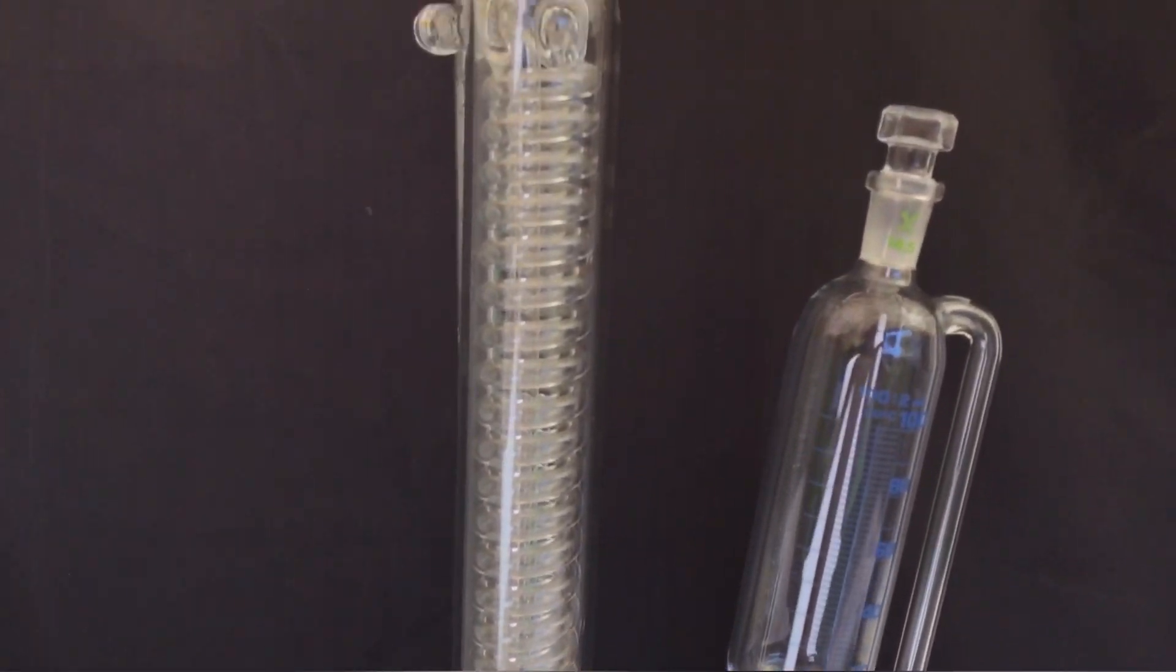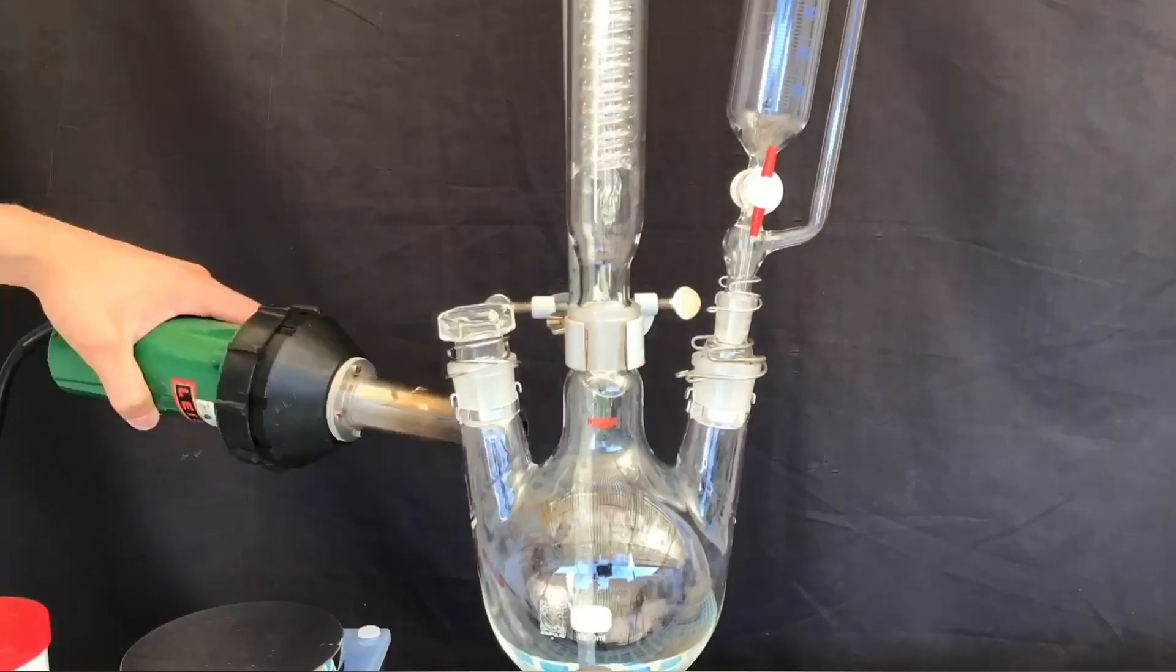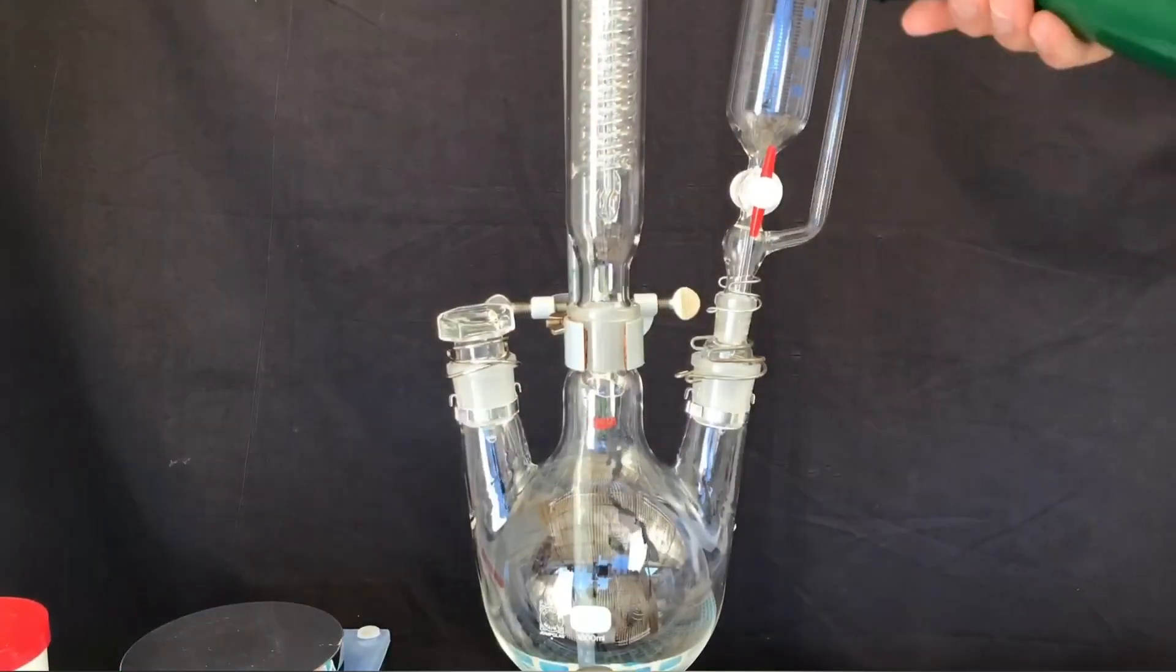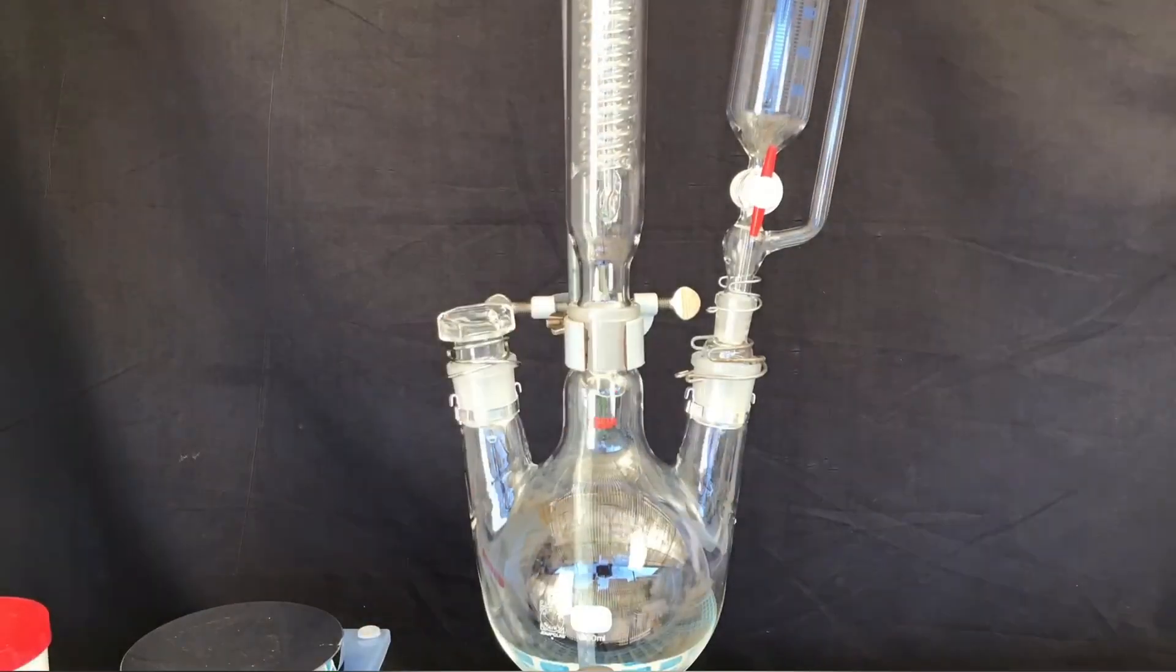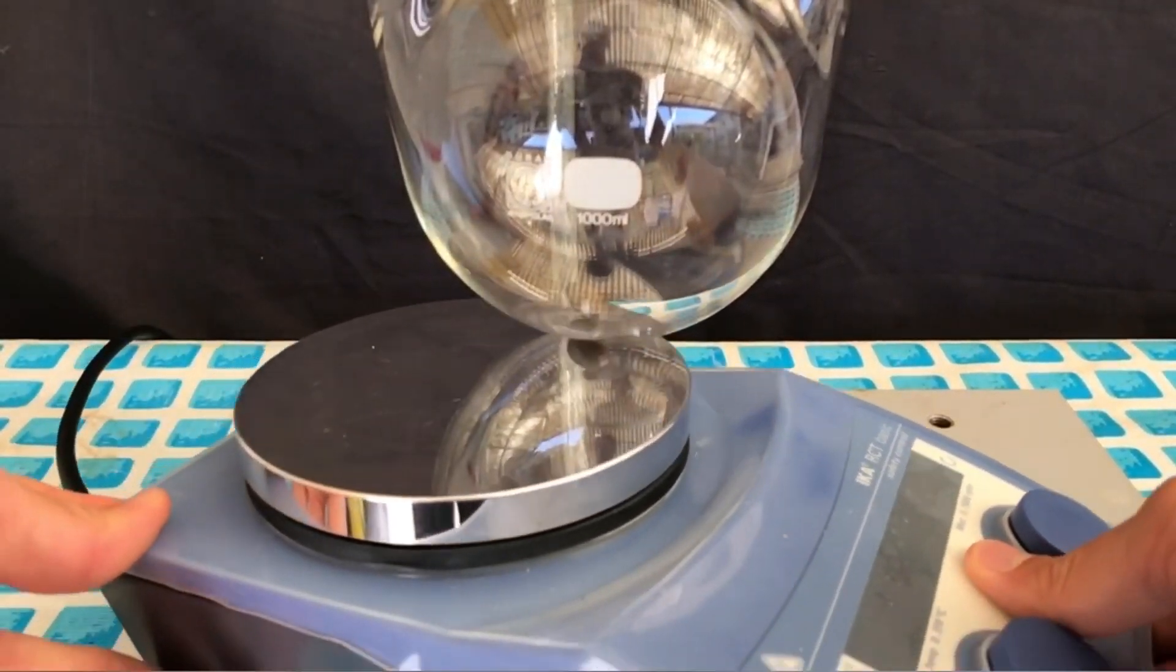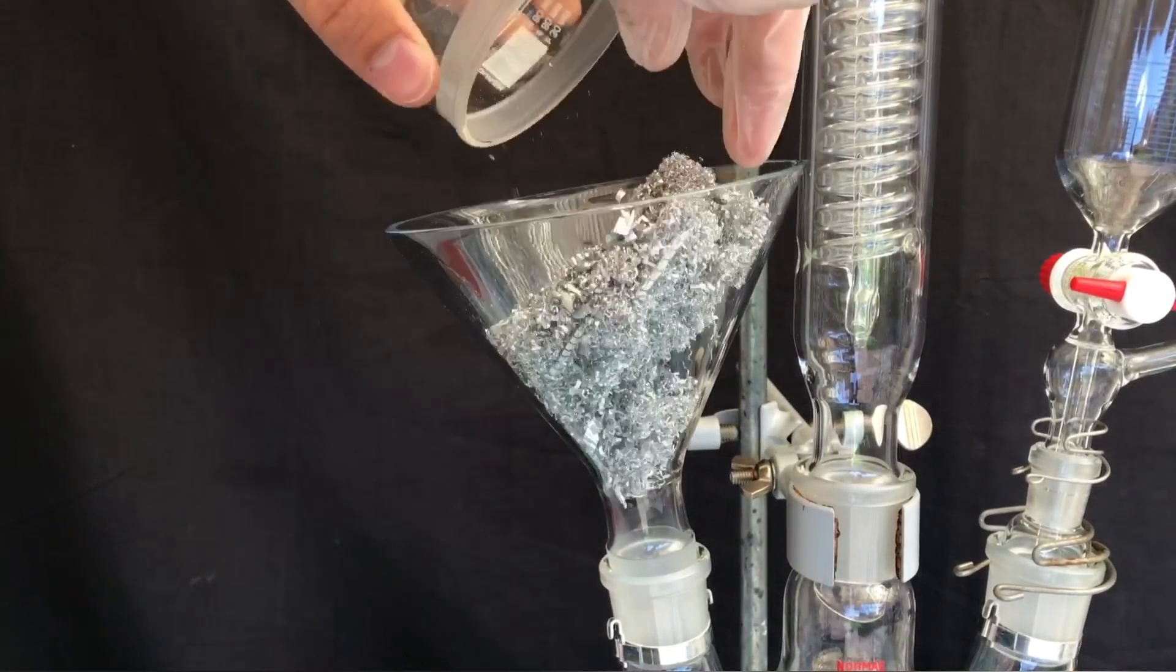This is the apparatus we are going to use: a reaction container, a pressure equalizing addition funnel, a reflux condenser and a calcium chloride drying tube. Prior to the reaction, the apparatus was heated to remove any last bit of moisture. Grignard reactions are extremely water sensitive and even the water that sticks to the glass could interfere with the reaction.